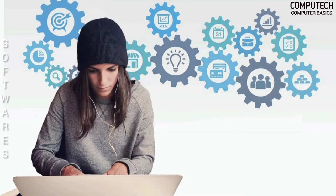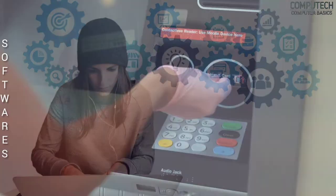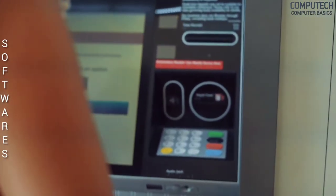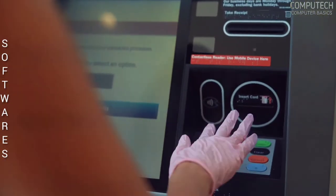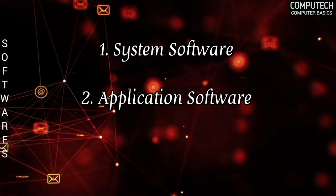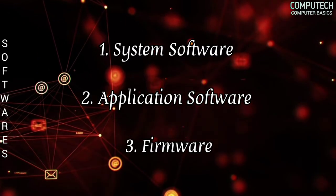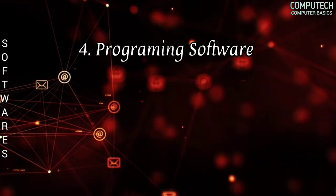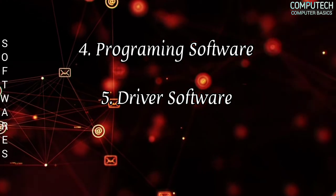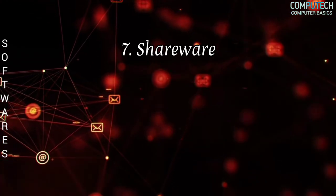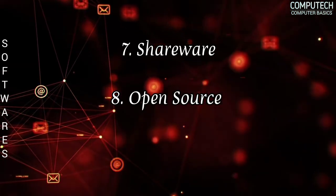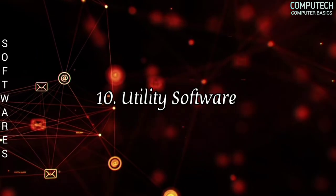There are different types of software used in computers and other computer-related machines: system software, application software, firmware, programming software, driver software, freeware, shareware, open source, closed source, and utility software.